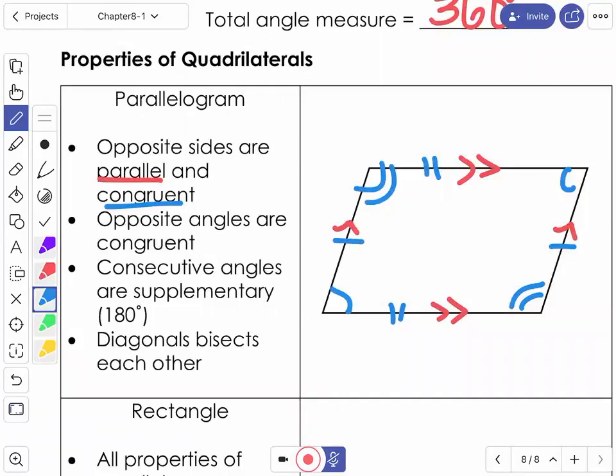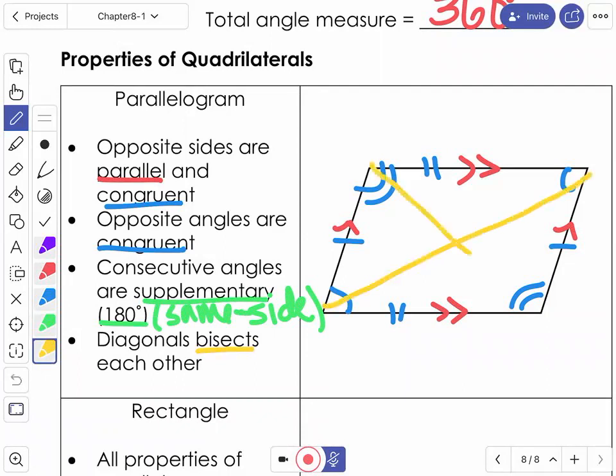We talked about consecutive angles have to be supplementary, meaning they're going to make 180. And again, that just means they're on the same side. And then we talked about the diagonals are going to bisect each other, which means when they are connected, that point in the middle splits them into equal parts. So that was pretty much everything we looked at with parallelograms.